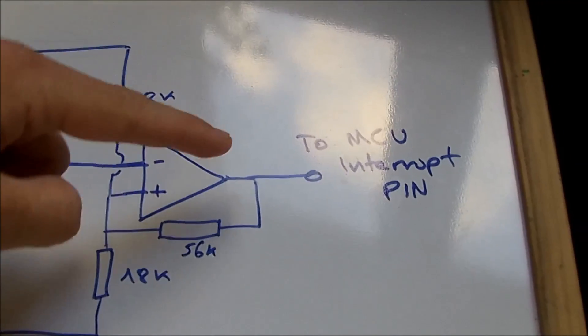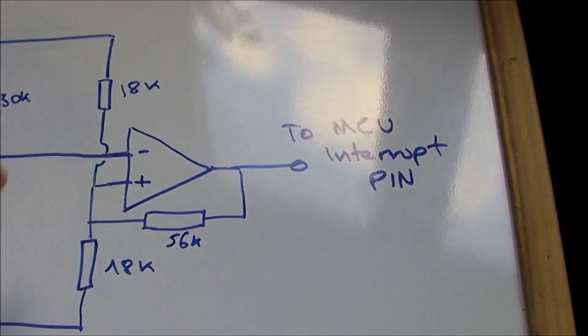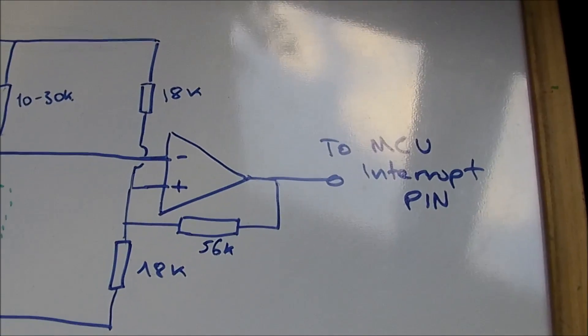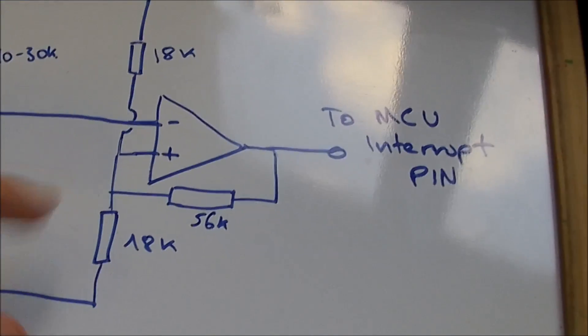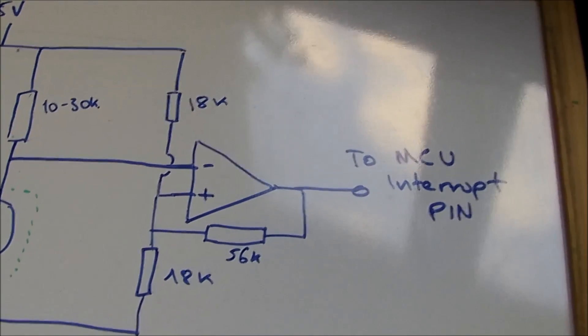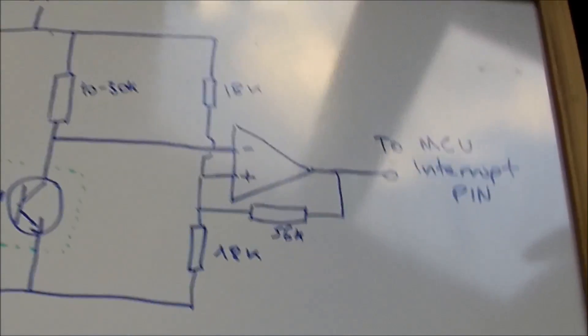When the output goes high it gives positive feedback which lowers the threshold so the signal can't bounce around there, and the other way around. So yeah, this is pretty important to make it work reliably and stable fashion.